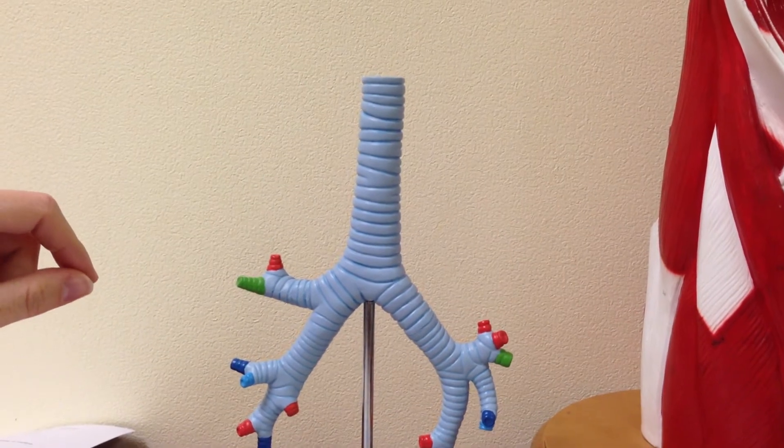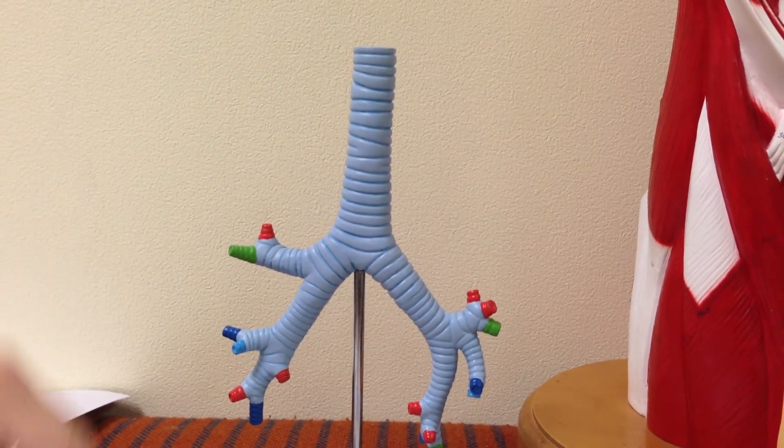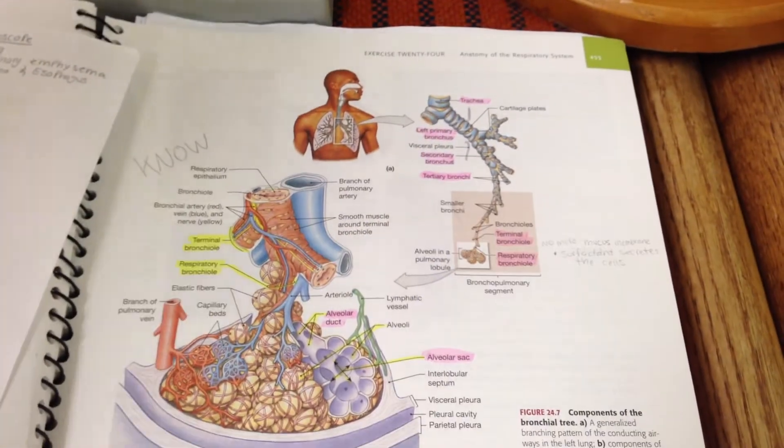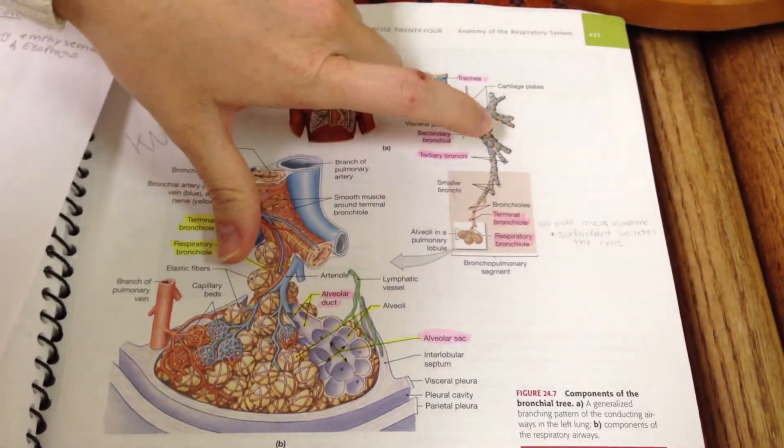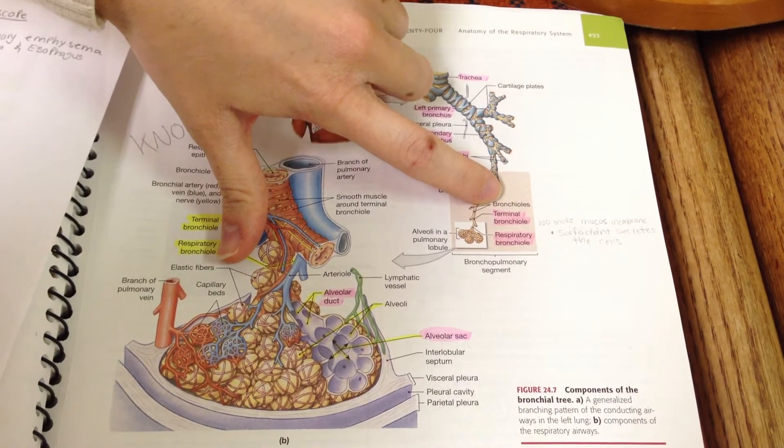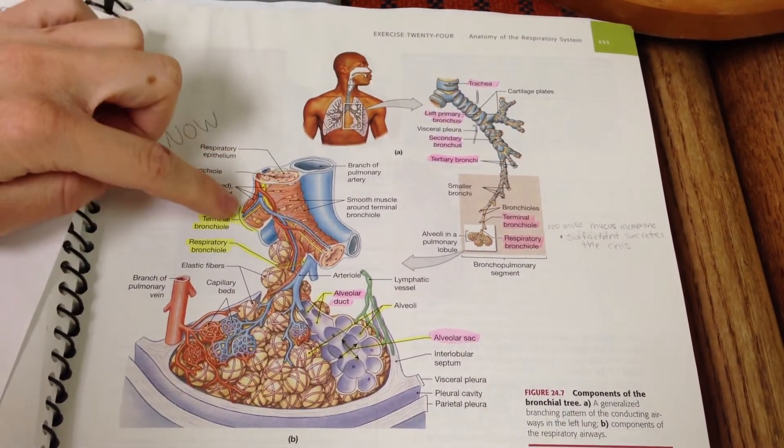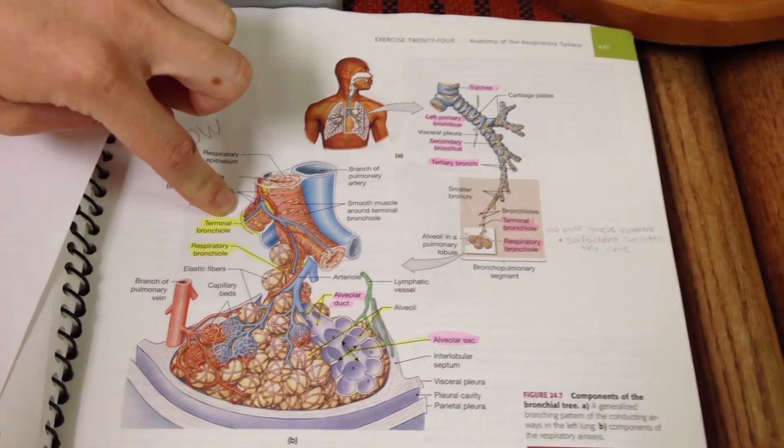And then it goes to the terminal and respiratory bronchioles. We're going to look down over here. Right here are the terminal and respiratory bronchioles, and then that will take us over to here. You'll see terminal bronchioles right here.